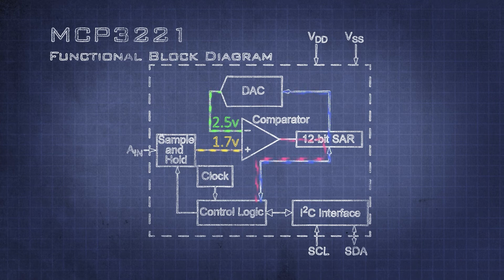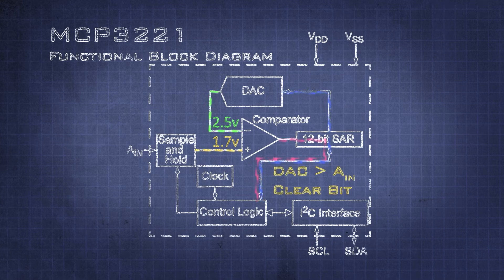We are now comparing the generated voltage to the analog input voltage we want to quantize. If our DAC's voltage is lower than the input voltage, we keep this bit set high. If our DAC voltage is higher, then we want to clear this bit.